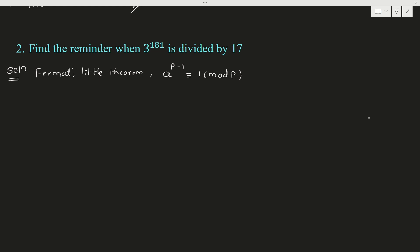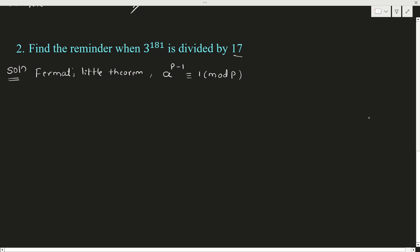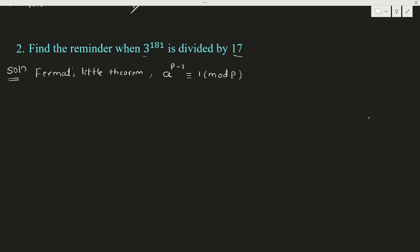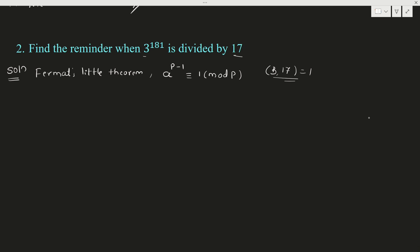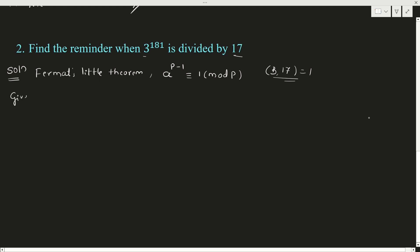What is P here? P is 17. What is A? A is 3. GCD of 3 and 17 is 1. In such a case we use Fermat's Little Theorem. Now we will solve this example: find the remainder when 3 to the power 181 is divided by 17.